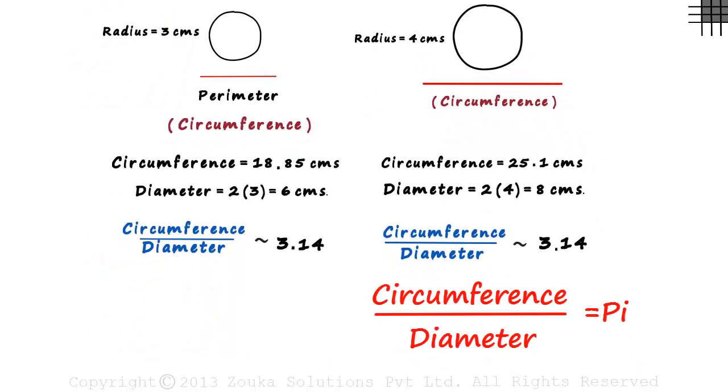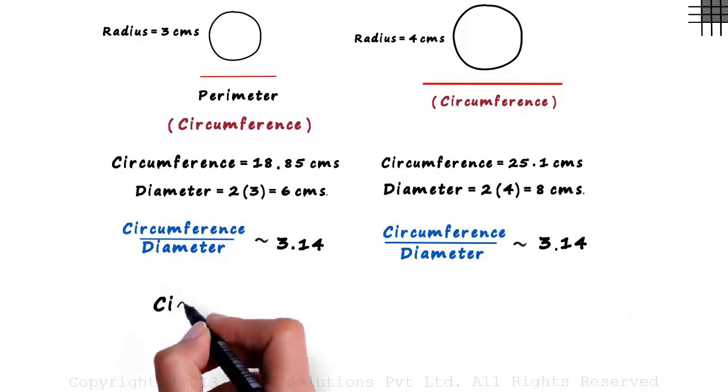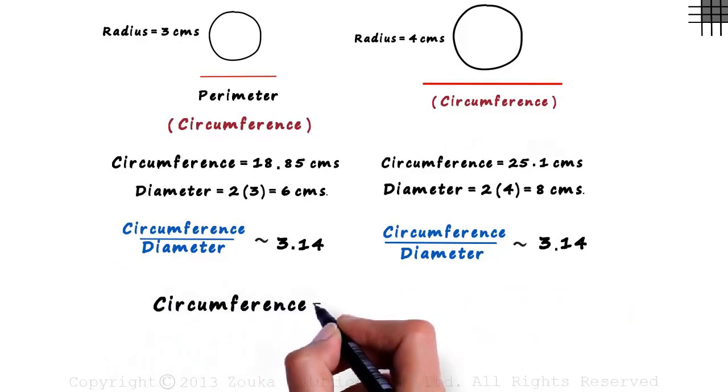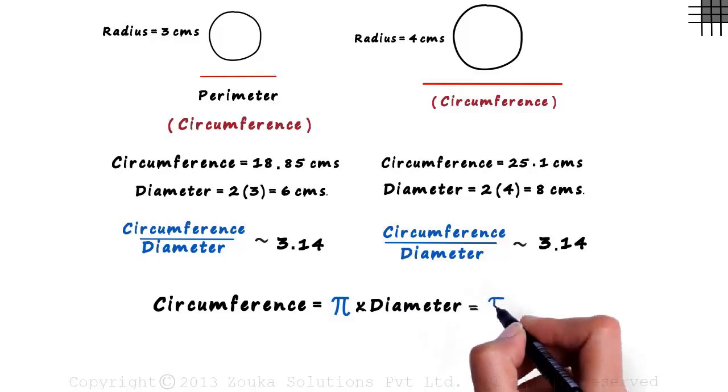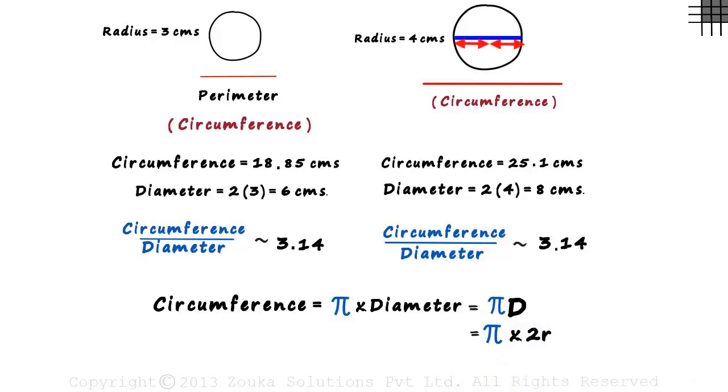As circumference by diameter equals Pi, we can say that the circumference of a circle equals Pi multiplied by the diameter. If we call the diameter D, then the formula can be written as π × D, which can also be written as π × 2R because the diameter is twice the radius. So the circumference of a circle is written as 2πR.